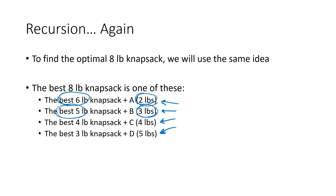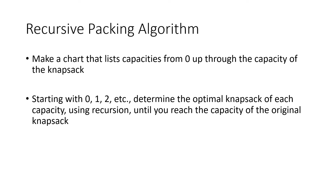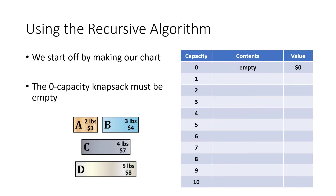This might seem like it gets complicated quickly, but it can't keep going forever. The knapsacks keep getting smaller, and eventually we'll get down to zero. The best zero-pound knapsack is simply empty, worth zero dollars. So we'll make a chart listing capacities from zero up through the full knapsack capacity — in our example that's 10 — and determine the optimal knapsack for each capacity using this recursive idea until we reach the original capacity.